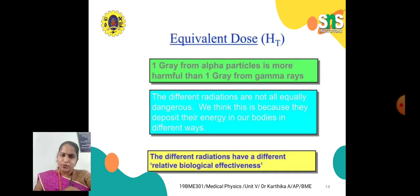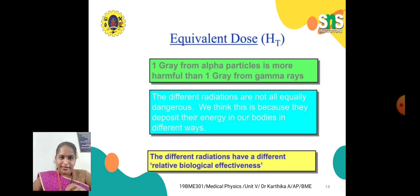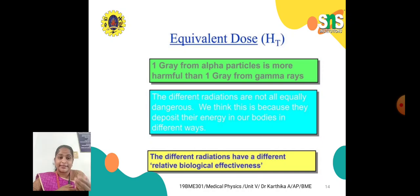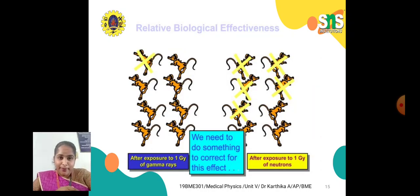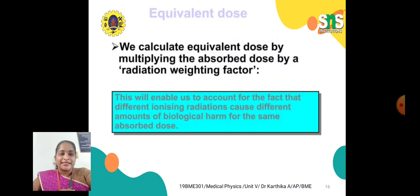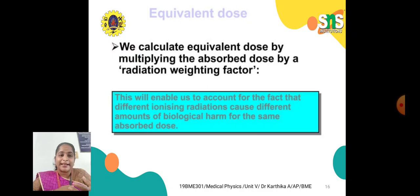What is equivalent dose and why do we need it? One Gray from alpha particles is more harmful than 1 Gray from gamma rays, because different radiations have different relative biological effectiveness. We calculate equivalent dose (Ht) by multiplying the absorbed dose by a radiation weighting factor (wr). This enables us to account for the fact that different ionizing radiations cause different amounts of biological harm for the same absorbed dose.